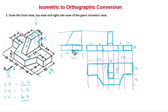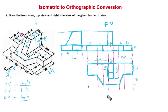This is our front view, this is our top view, and this is our right side view. In first angle projection, the right side view is placed to the left. This is the solution for problem number 2.